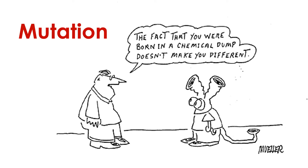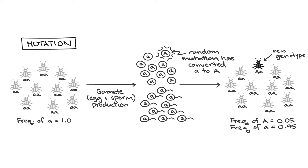Mutations are random alterations of genetic material caused by damage to DNA or errors in replicating DNA. Contrary to some misconceptions, mutations are common and natural, and very rarely result in observable changes in organisms. That said, mutations create variation among individuals, and over time a mutation may become common in a population if it is passed between parents and offspring.